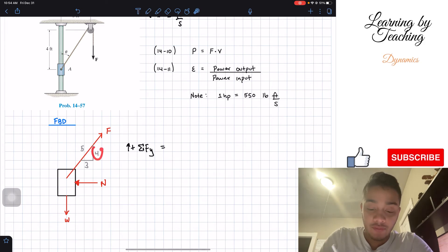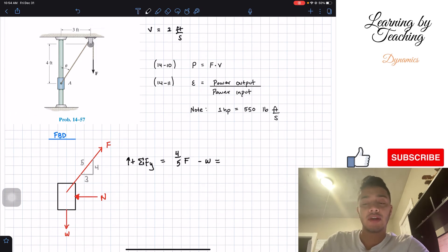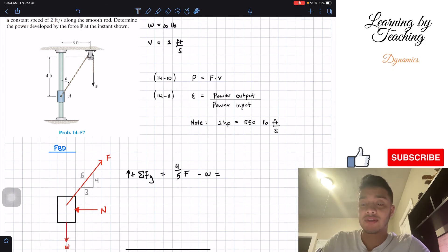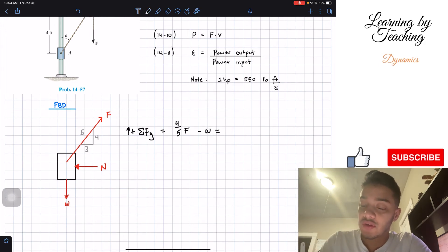So what do we have? Well, we got that four over five of F is going in the y-direction. So we got four-fifths of my force F is going up, so positive. And then we got minus W, and this is equal to mass times acceleration. But wait, we don't know the acceleration. The hint is that we're at a constant speed, meaning constant velocity, which means that our acceleration is equal to zero. Therefore, all my right-hand side is equal to zero.